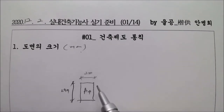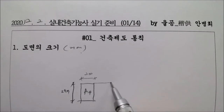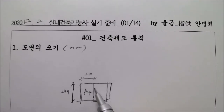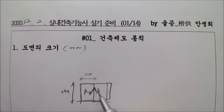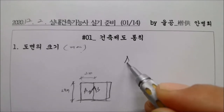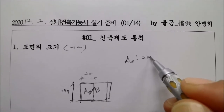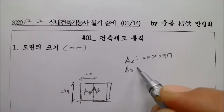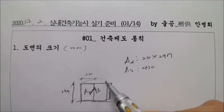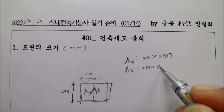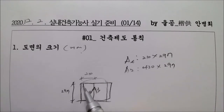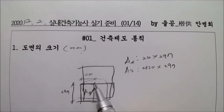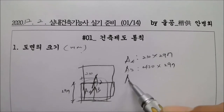그리고 이게 한 장이 더 붙었어요. 그러면 얼마가 될까요? 이게 A3가 되겠죠. 그러면 A4는 210에 297, A3는 420에 297입니다.